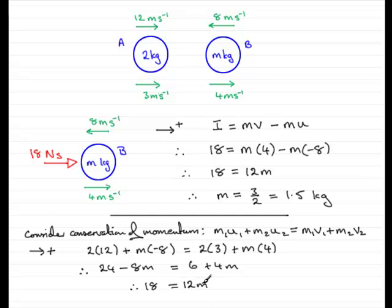And if I divide both sides by 12, 18 divided by 12 gives us m, and it follows that m equals, again, 3 over 2, or 1 and a half kilograms.